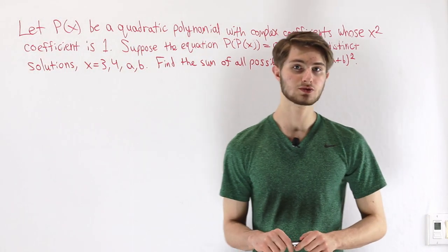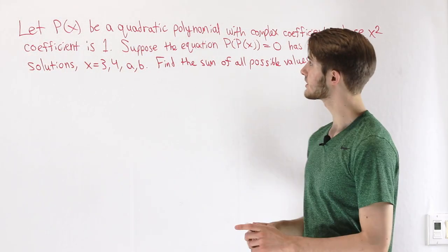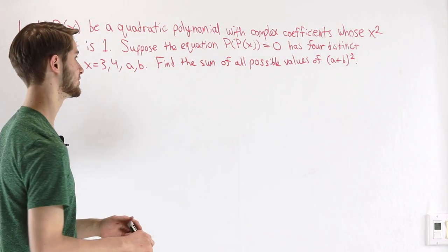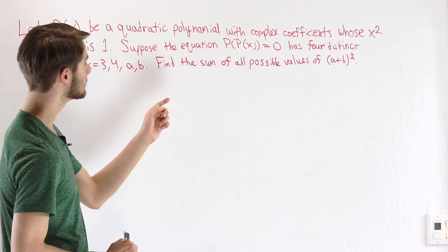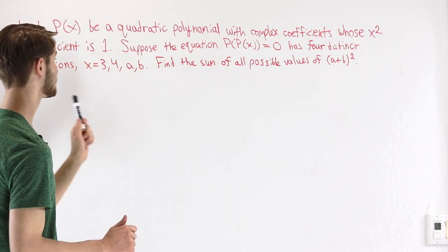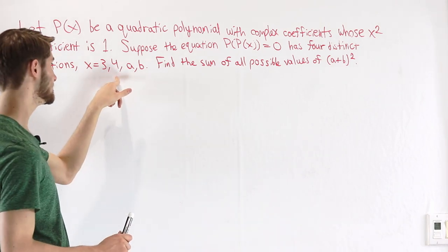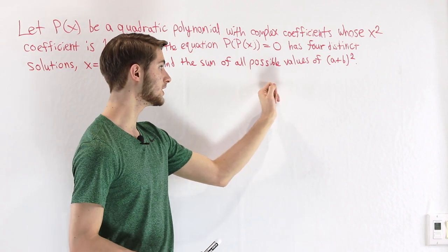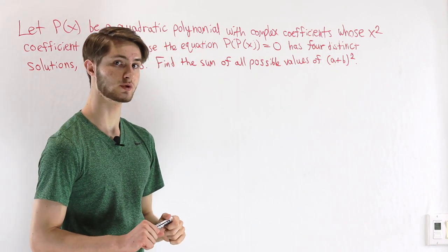We are going to do the 2020 AMC Problem 14. Let p of x be a quadratic polynomial with complex coefficients whose x squared coefficient is 1. Suppose the equation p of p of x equals 0 has four distinct solutions x equals 3, 4, a, and b. Find the sum of all possible values of a plus b squared.